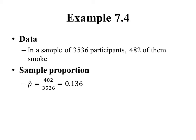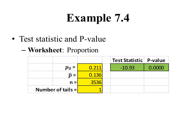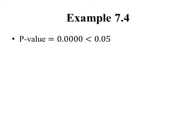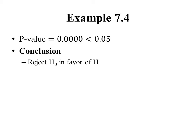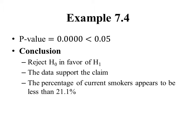The hypothesis test will determine just how much the data support the claim. Going to the proportion worksheet, we enter p₀ = 0.211, our sample proportion, our sample size, and select one tail. The test statistic and p-value are calculated. We again get a p-value of 0. Comparing to 0.05, the p-value is less than 0.05, so we reject the null hypothesis in favor of the alternative. Our data support the claim — the percentage of current smokers appears to be less than 21.1%. The hypothesis test confirms the strength of that support is sufficient to conclude the data do support the claim.